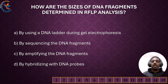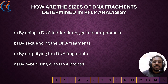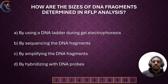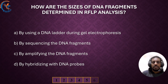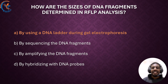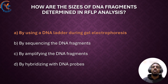How are the sizes of DNA fragments determined in RFLP analysis? The correct answer is by using a DNA ladder during gel electrophoresis. A DNA ladder, which contains fragments of known sizes, is used during gel electrophoresis to determine the size of the DNA fragments.